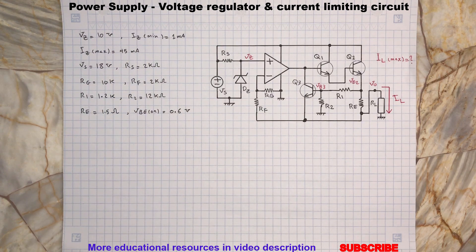Here the op-amp is configured as a non-inverting amplifier which compares the Zener reference voltage with the feedback voltage from the sensing resistors RF and RG.